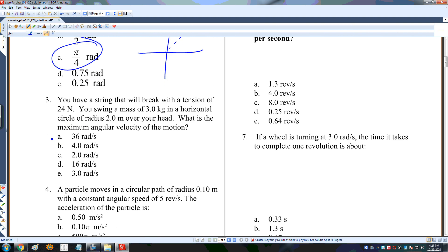You have a string that will break with a tension of 24 newtons. You swing a mass of 3 kilograms in a horizontal circle of radius 2 meters. What is the maximum angular velocity, omega, in radians per second? This ft is equal to my centripetal force, so it's m omega squared r. So I'm solving for omega. It's going to be the square root of ft over mr, 24 over 3 times 2. That's the square root of 4, or 2 radians per second for number 3.